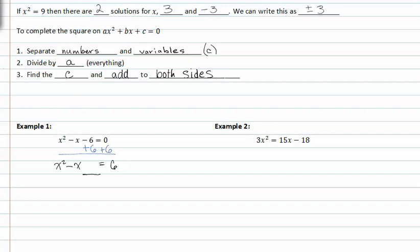Number two, we divide by a. a is the coefficient in front of x squared. Notice the coefficient is one right now, and so we don't have to divide by one because nothing would change. In example two, we'll have something other than one. It'll be a three and then we will have to divide.